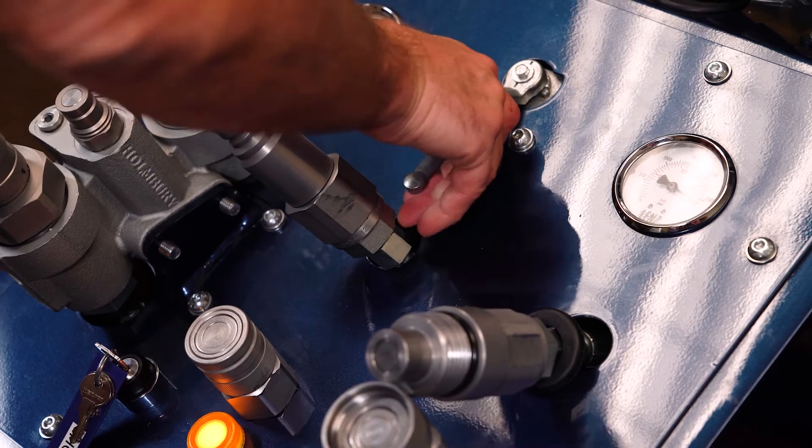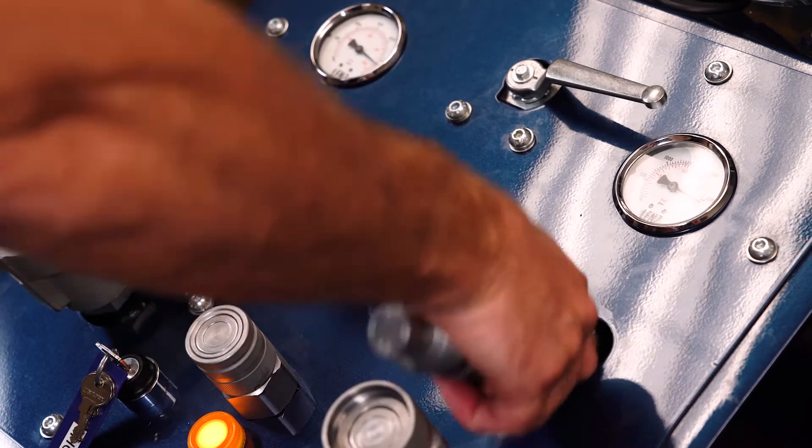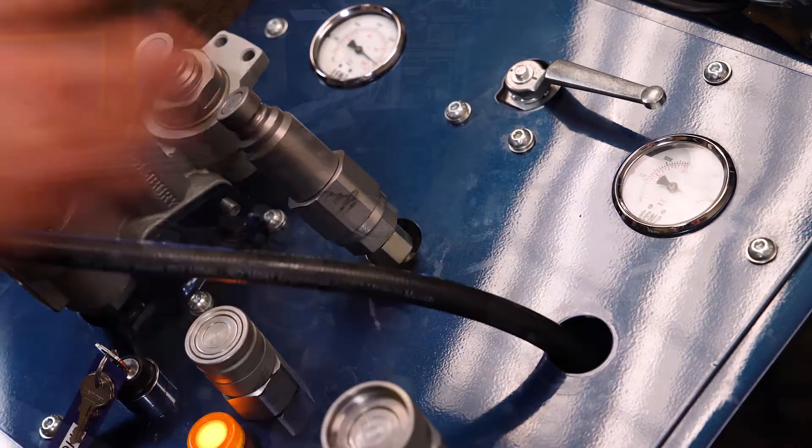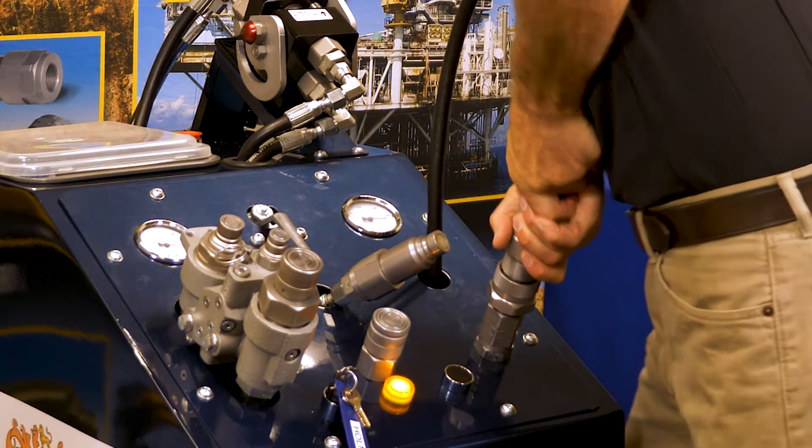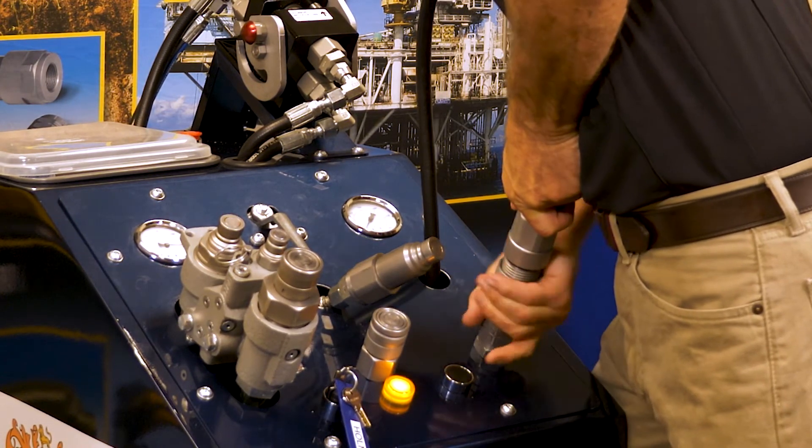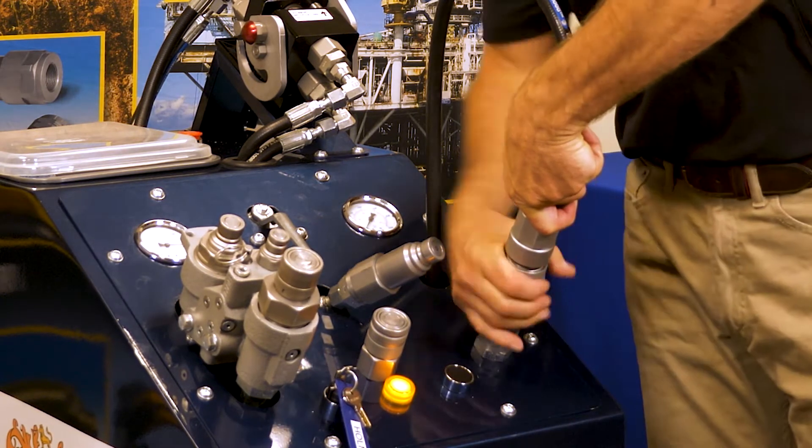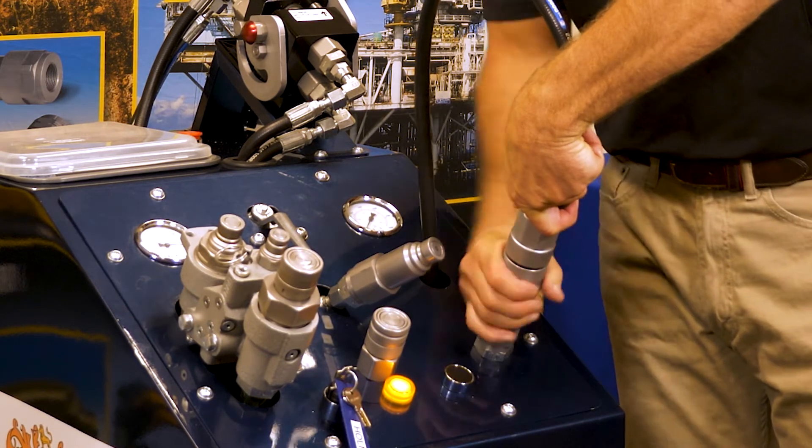Bring your male in, insert into the female, and start your threads. As you thread the two together, you're going to notice the trap pressure, or the gauges go to zero, addressing the trap pressure on both sides, the male and the female.